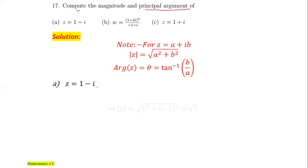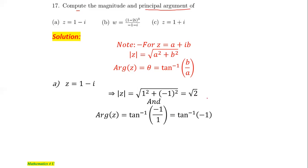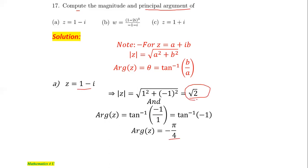Applying these formulas for part a, we have z = 1 - i. The magnitude is the square root of 1² + (-1)², which equals √2. The principal argument is tan inverse of (-1/1). Since the components are 1 and -1, the angle is in the fourth quadrant, so tan inverse of -1 is -π/4. Therefore the argument is -π/4 and the magnitude is √2.